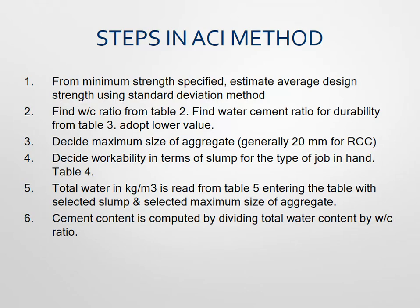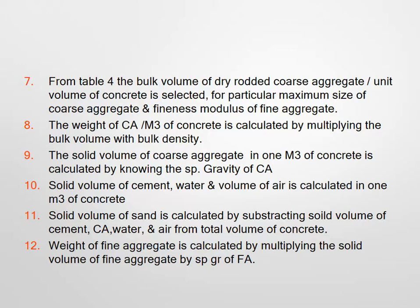From Table 1, the dry rodded bulk volume of coarse aggregate per unit volume of concrete is selected for the particular maximum size of aggregate. The weight of coarse aggregate per meter cube of concrete is calculated by multiplying the bulk volume by the bulk density. The solid volume of coarse aggregate is calculated using the specific gravity. Then the solid volumes of cement, water, and air are calculated, and the solid volume of sand is found by subtracting all other solid volumes from the total concrete volume.